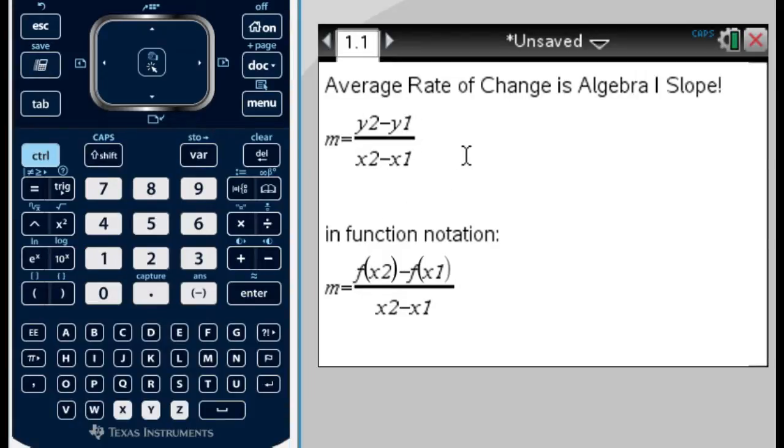But now we want to rewrite it with function notation. If you remember, f of something is really just another way of saying the y-coordinate that goes with the x-coordinate. So what I can write is m equals f of x2 minus f of x1 over x2 minus x1.